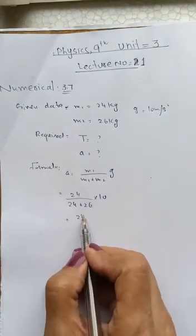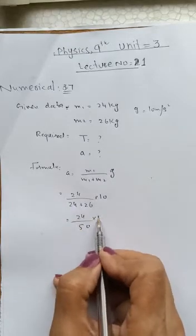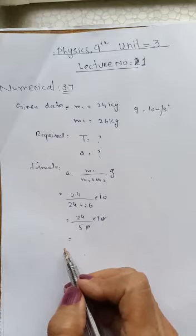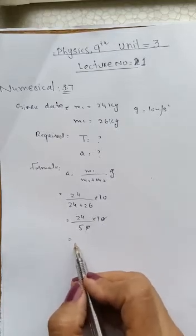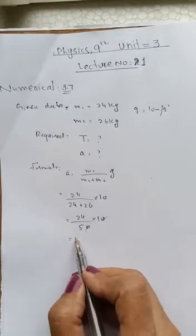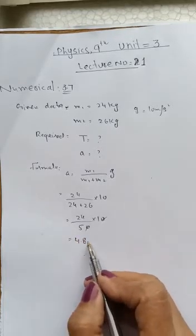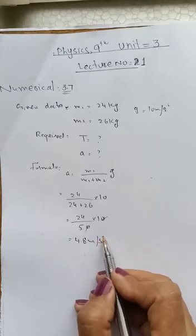After that, we add 50. We have to cancel it. Then we have to divide 24 by 5. For the 24 and 5, we get 4.8 meters per second square.